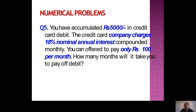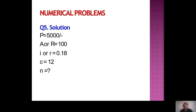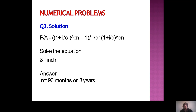Next problem: you have accumulated rupees 5,000 in credit card debt. The credit card company charges 18% nominal annual interest compounded monthly. You can pay only rupees 100 per month. Using P/A = [(1 + i/C)^(CN) − 1] / [(i/C) × (1 + i/C)^(CN)], solving for N gives 96 months or 8 years to pay off the debt.